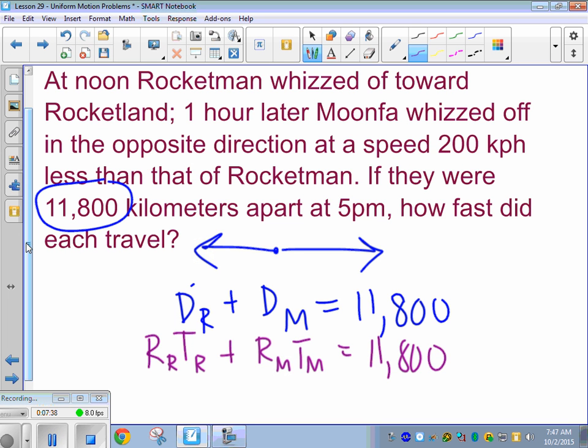All right. So the easiest things are probably their speeds, right? Let's see. At noon, whizzed off towards one hour later, Moonpha was on another speed of 200. All right. Where does this 200 kilometers per hour go? Oh, less than that of Rocketman. That's important. Let's do time, actually, first. They met at 5 p.m. Oh, this guy left at noon. Took me a while to find that one because it wasn't in 12 p.m. time. All right. So we went from noon to 5 p.m. So Rocketman whizzed off. So how long did Rocketman travel for, you guys? Yeah. So at noon, he left, right? And then we ended at 5 p.m. So Rocketman traveled for five hours. So time of Rocketman is five hours. And then it says one hour later, Moonpha whizzed off in the opposite direction. So one hour later. So how many hours did Moonpha travel for? Four hours. So it has to be one hour or less.